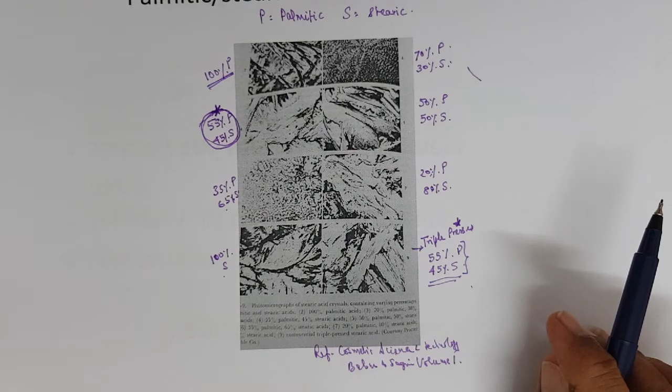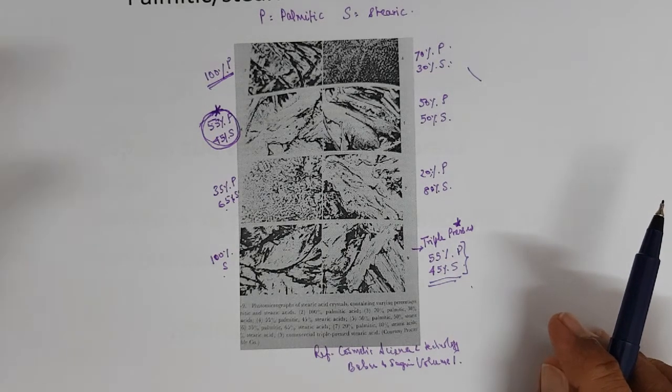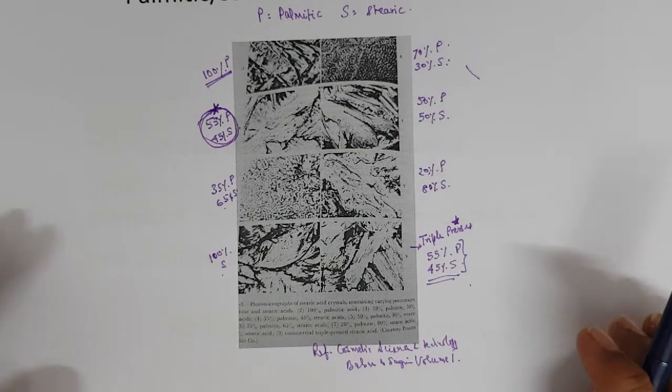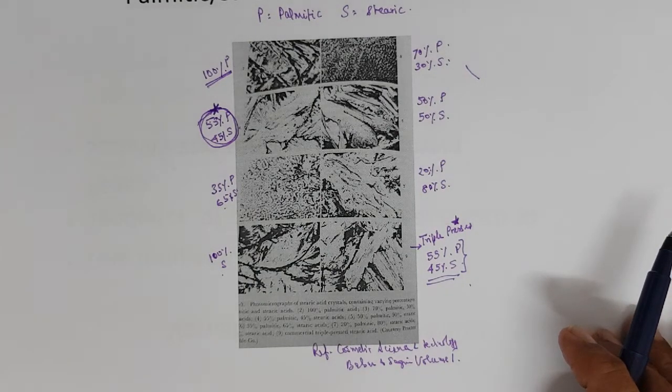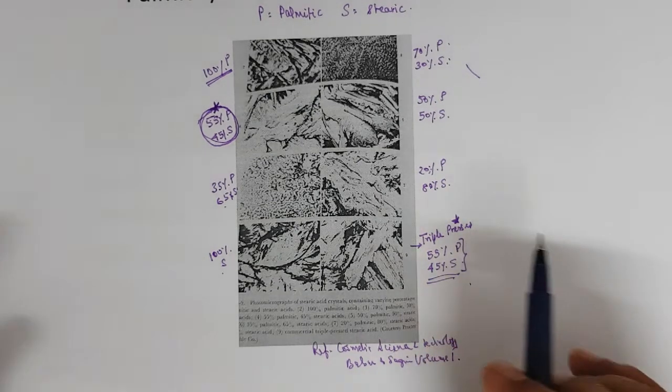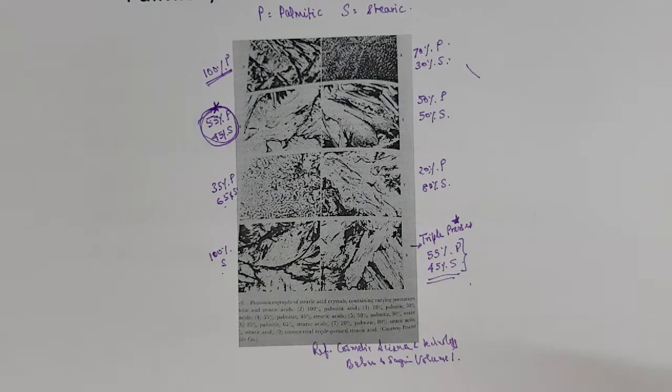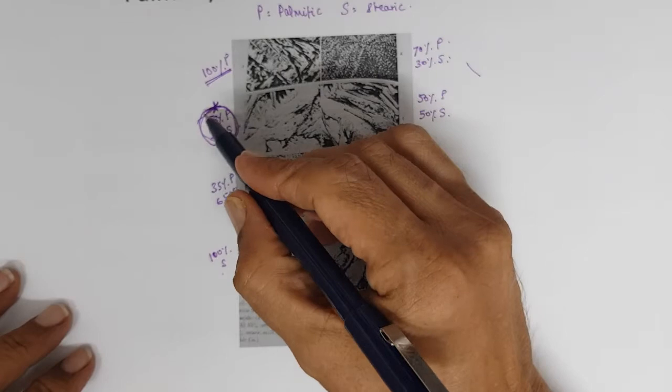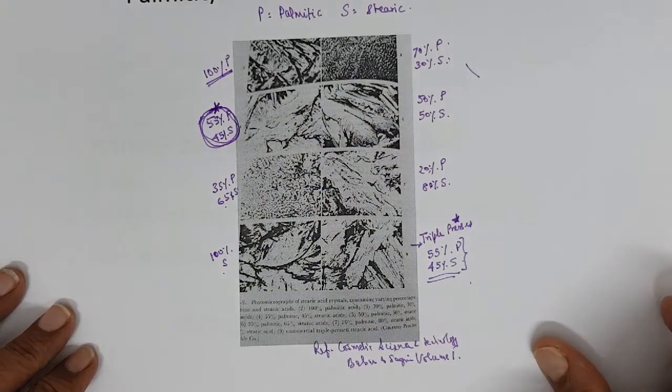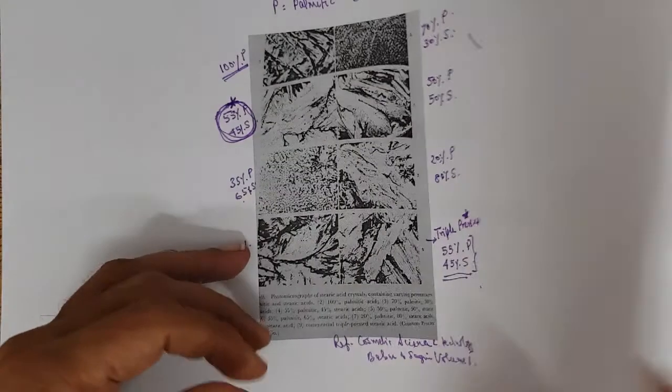Triple pressed stearic acid ends up having 55% palmitic and 45% stearic. When you decide stearic acid for your vanishing cream, you have to specify this: it has to be iodine value less than 1 and it should be 55% palmitic and 45% stearic. Actually the molecular weight of stearic acid is more than 280. I took 270 in the calculation before because whatever we use will be a combination of stearic and palmitic. Palmitic acid molecular weight is around 260.